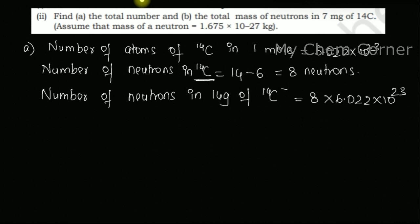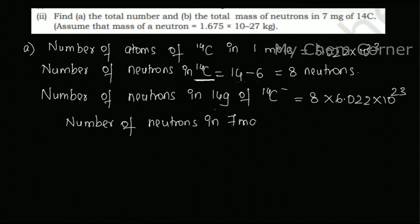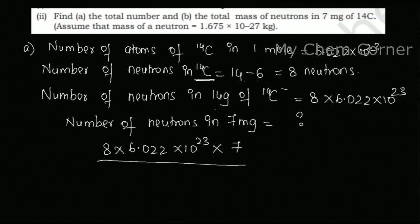Since 14 grams is the molar mass of one mole of this isotope, I can multiply by Avogadro's number to get the total neutrons. Therefore, the number of neutrons in 7 milligrams equals — by cross multiplication — 8 × 6.022 × 10²³ × 7 milligrams, divided by 14 grams.